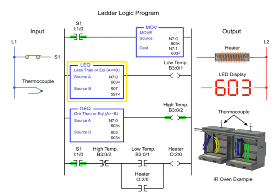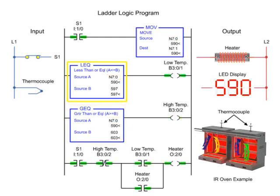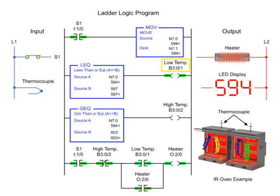Using the less than or equal to and greater than or equal to instructions addressed to the same integer file, the source values of A and B are compared to control the heater. With source A less than source B of the less than or equal to instruction, the low temp and heater outputs are enabled.